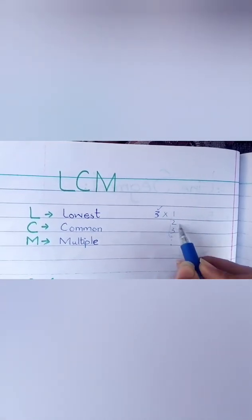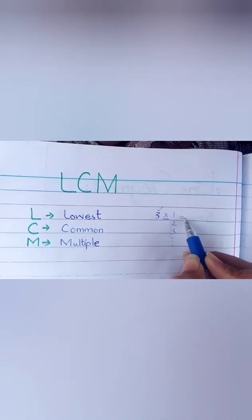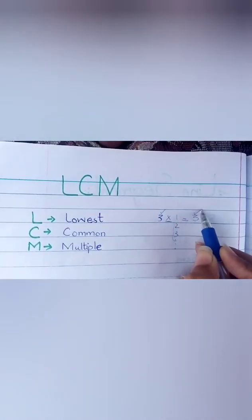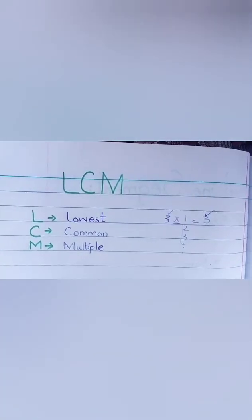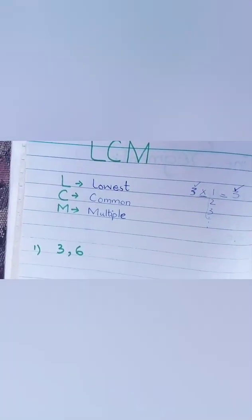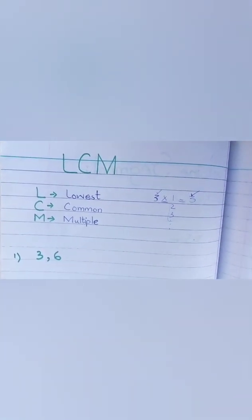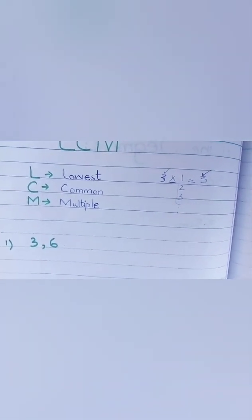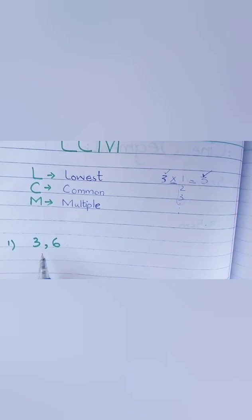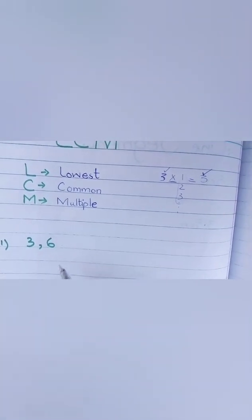Usko hum log natural number se jab multiply karte hain, toh jo answer aata hai, ye kya hota hai, multiple of this number. Jaise humara question number one hai, three aur six, aap log ko do numbers diye gaye hain, aur bola gaya ke find out the LCM of these numbers.